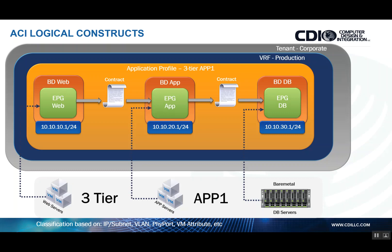Because ACI is based on a zero-trust model, these EPGs have no communications between each other by default. So you need to create something called a contract, which can be considered a glorified access list. But rather than creating access lists based on traditional five-tuple — where you define source and destination IP, source and destination port, and protocol — in ACI, we define the EPGs in place of the source and destination IP addresses. We configure something called a filter within the contract, which represents the ports and protocols allowed between the endpoint groups.